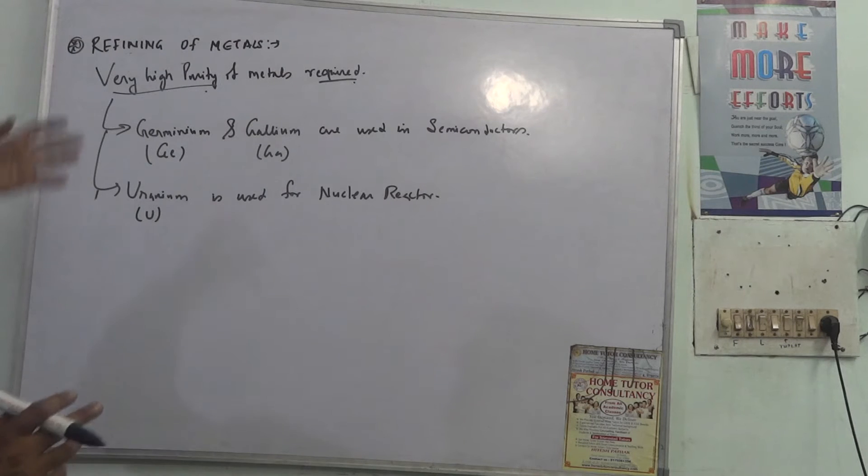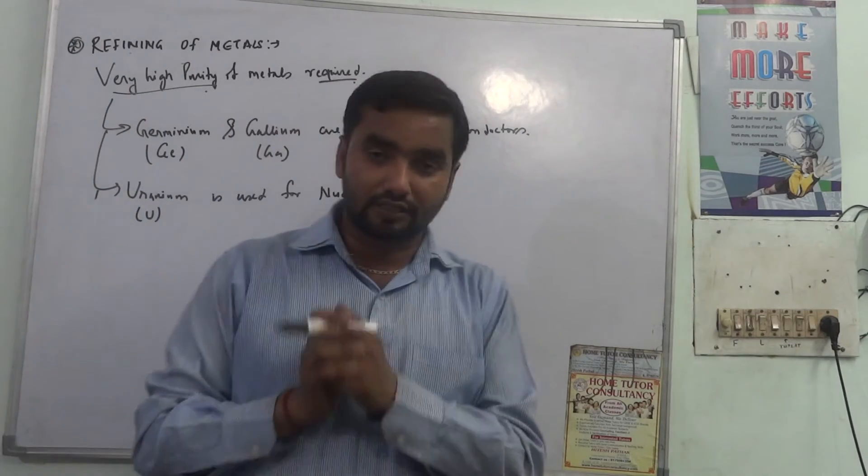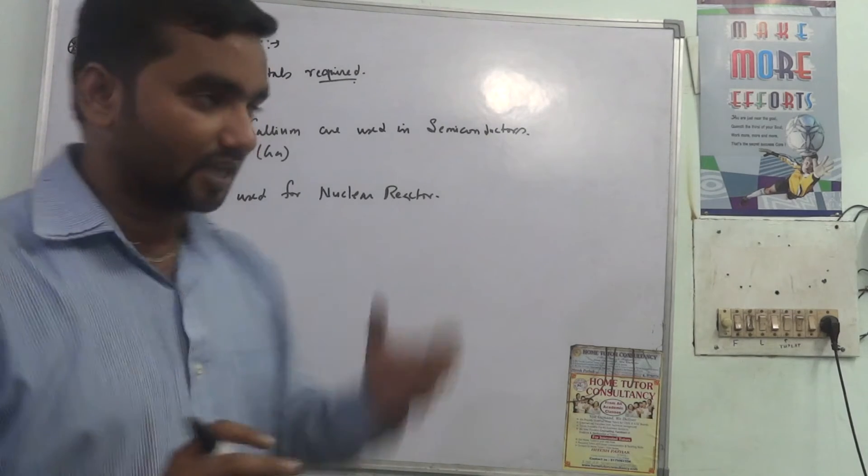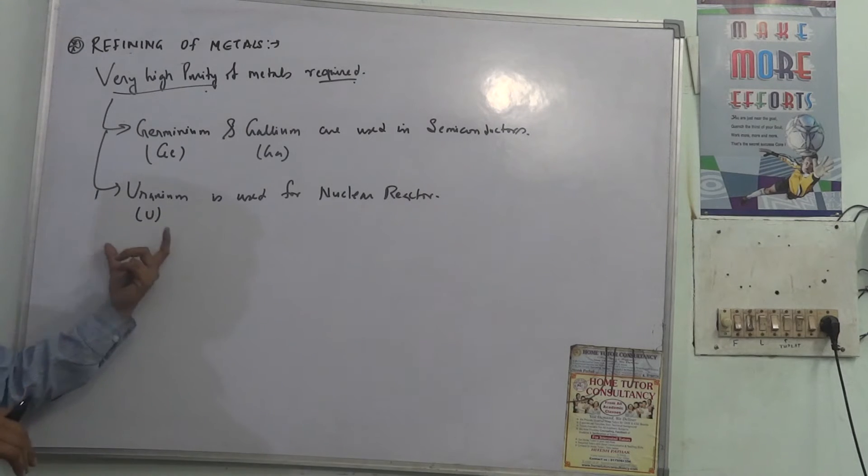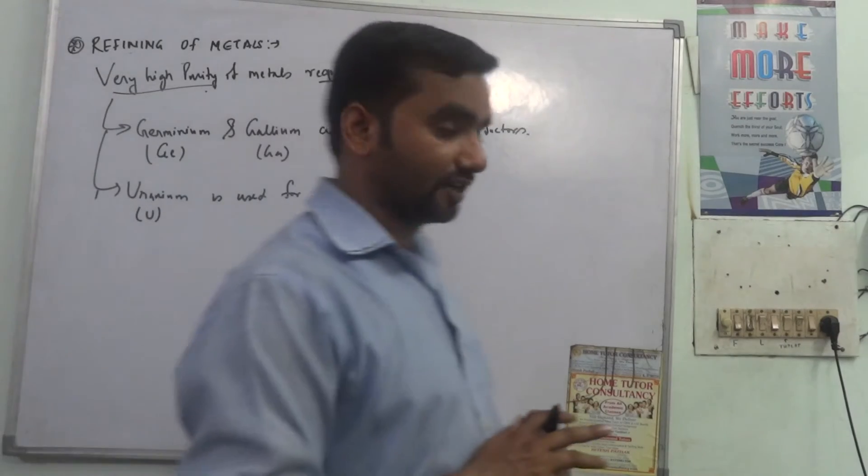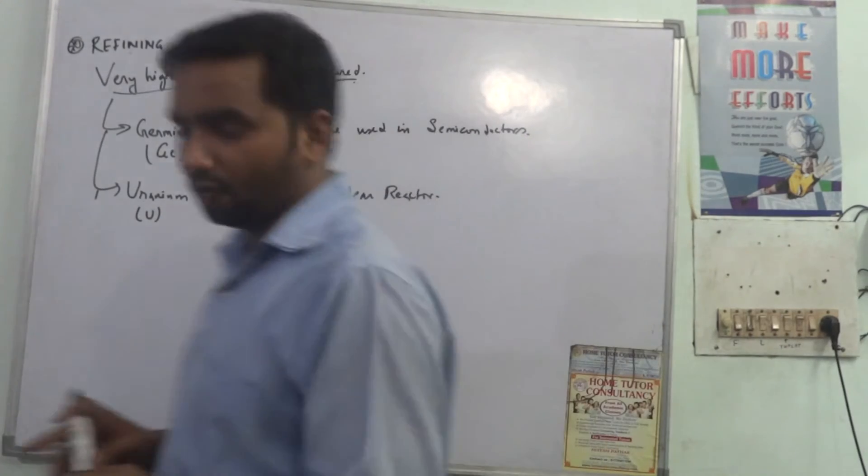We are talking about refining of metals which means we are talking about such case where metals are very much pure, which means that 1% of the impurity. The metals have to be used for germanium and gallium. These are two metals which are used in semiconductors, in the nuclear reactor, and uranium which is used in nuclear reactor. Uranium which is used in the nuclear reactor to produce energy.